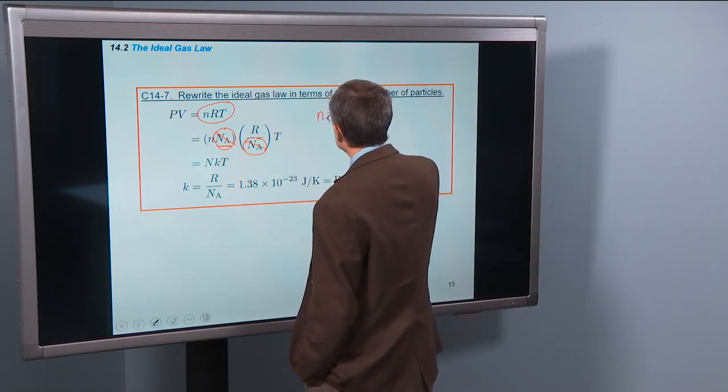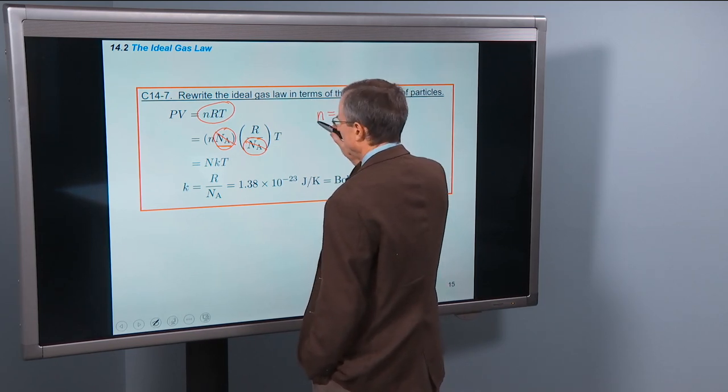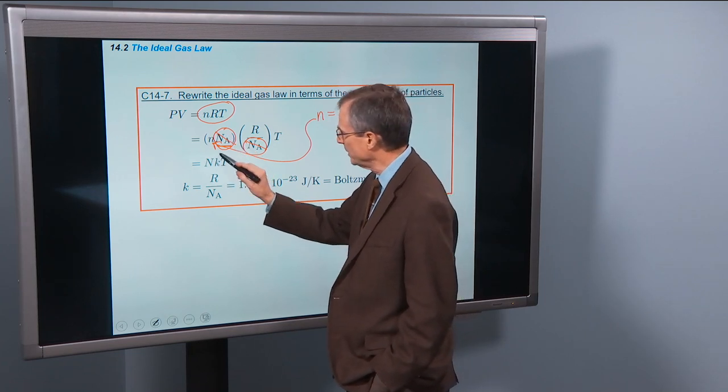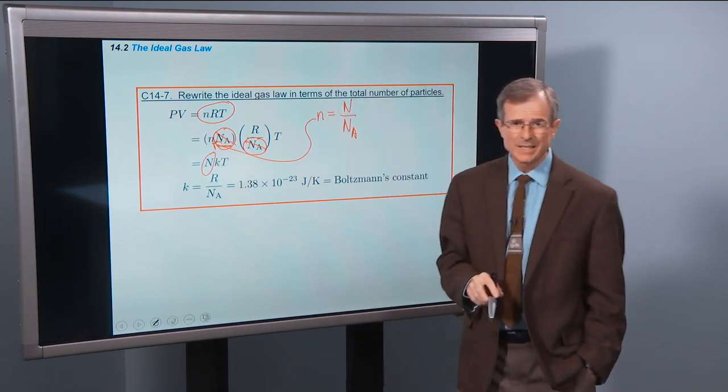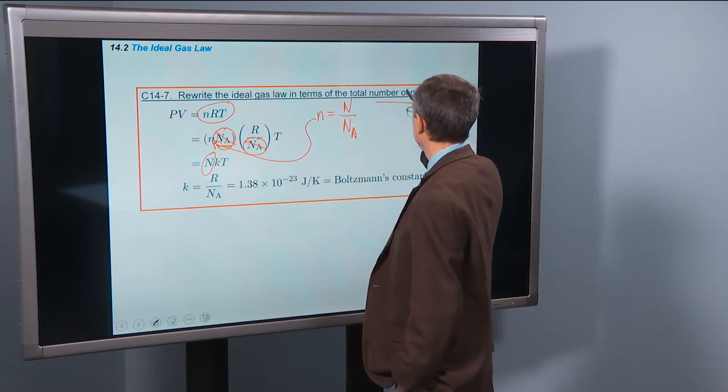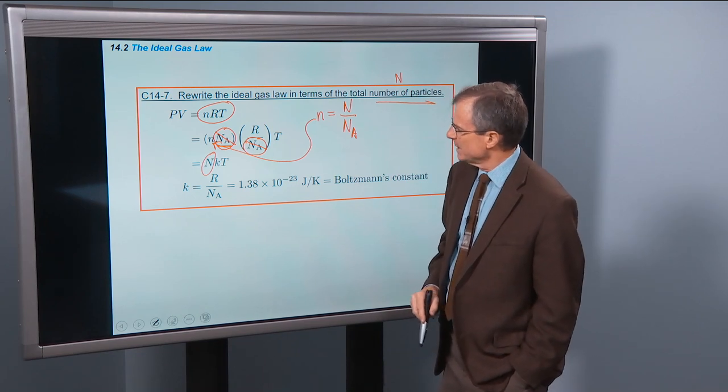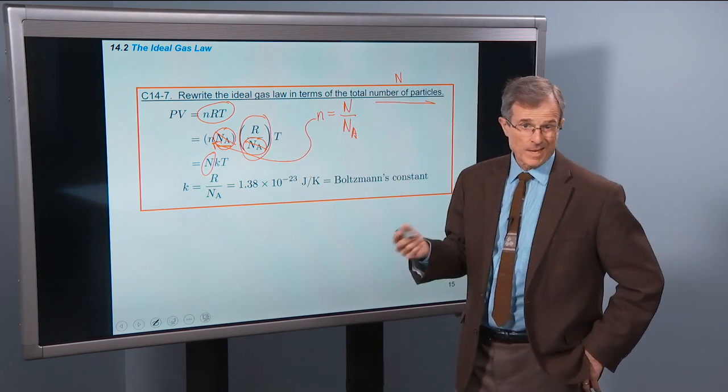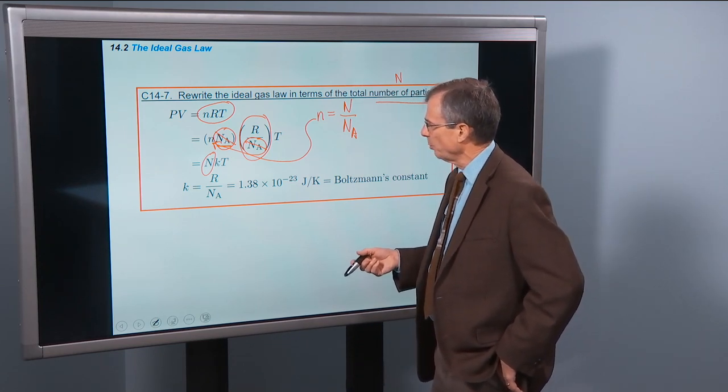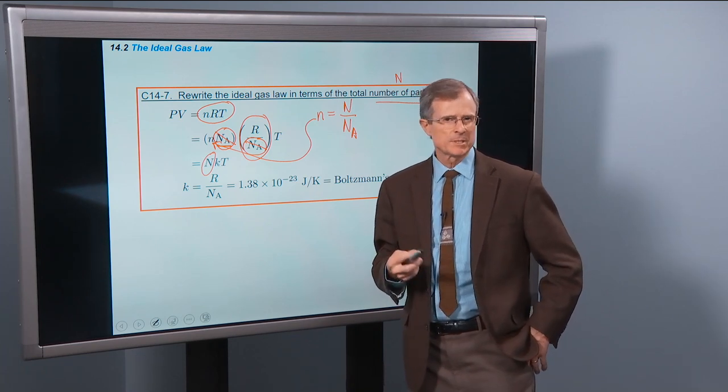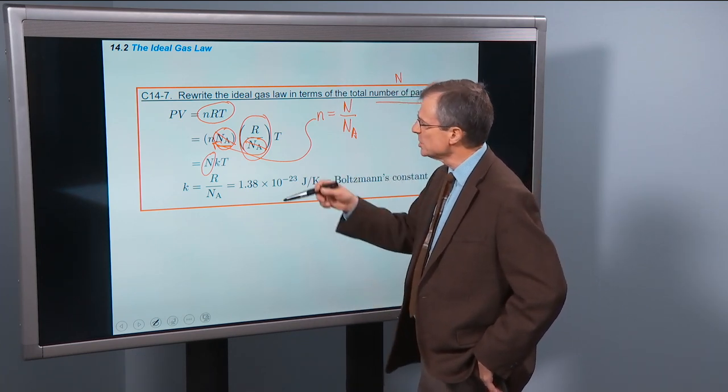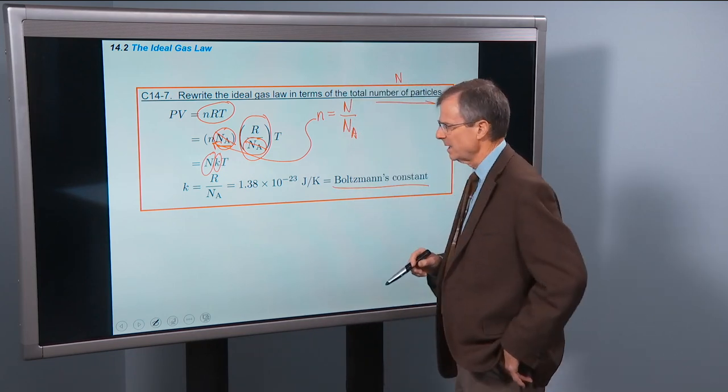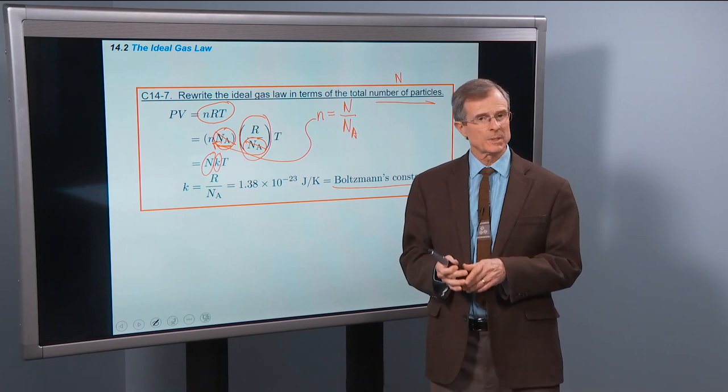But multiplying and dividing by Na allows us to do the following. Remember that N is big N over Na. If you plug that in here, then you'll have N is big N over Na times Na, and the Na's cancel. And you just get big N out of the deal. So I have succeeded in rewriting it in terms of the total number of particles. That's N, total number of particles. But then what's the stuff that's left over? I've got R divided by Na here. R is the gas constant, 8.31 joule per mole Kelvin, divided by Na, 6.022 times 10 to the 23rd particles per mole. That gives us a new constant, which we call K. It's called Boltzmann's constant, and it proves to be one of the most important constants in all of physics.